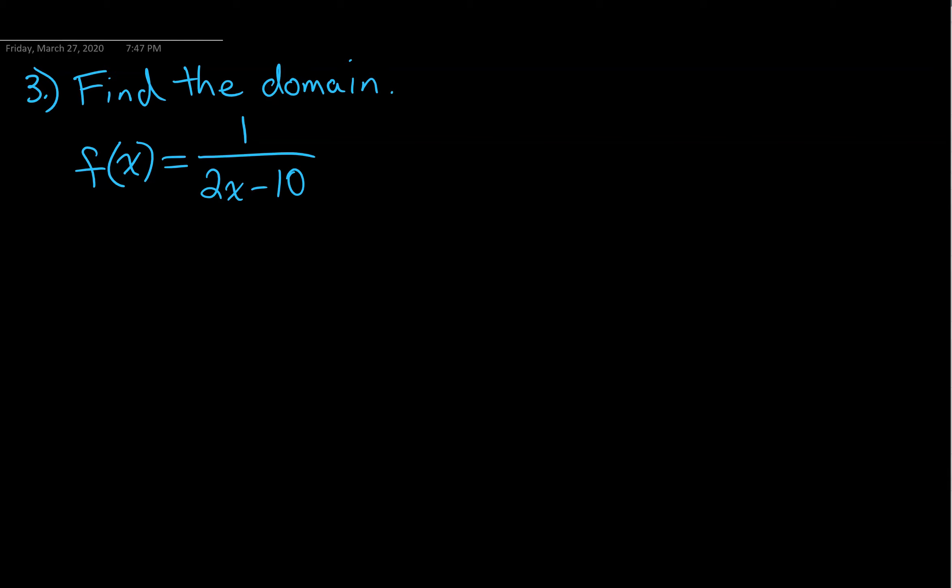Number three says find the domain of the function. Remember, there are only two things that can mess up the domain of a function: if we can get zero in the denominator or if we can get a negative number underneath the square root or even index root. On this one, we don't have any radicals to worry about.